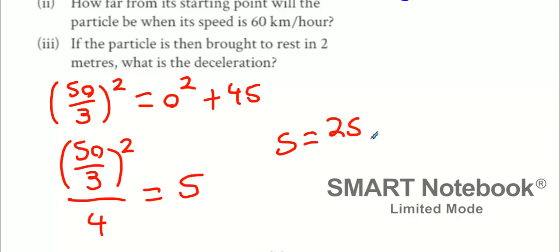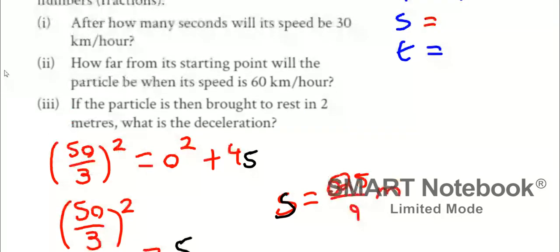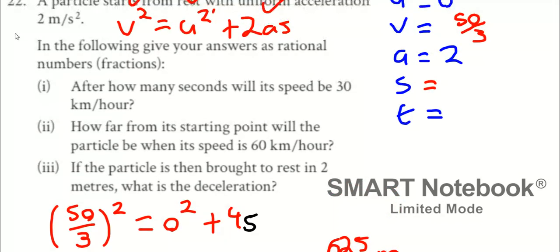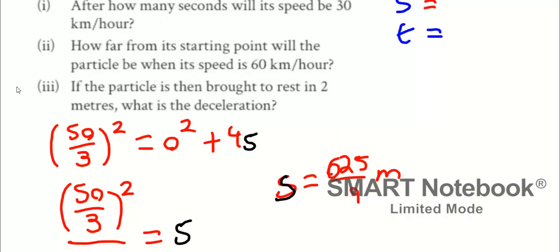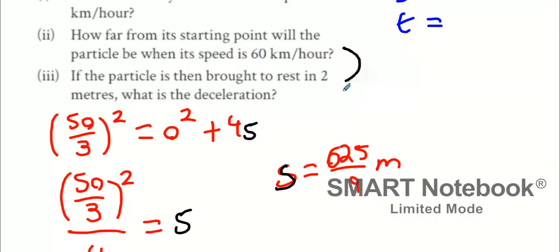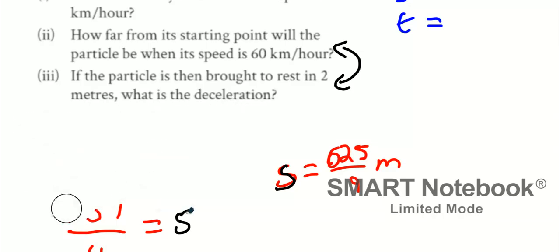And would you care to give me the answer for that? 2,500. And then when you do all that? 625 over 9 meters. Last one, if the particle is then brought to rest in 2 meters, what is the deceleration? So I'm treating this question as a continuation of the last one. That's what I think I need to do.